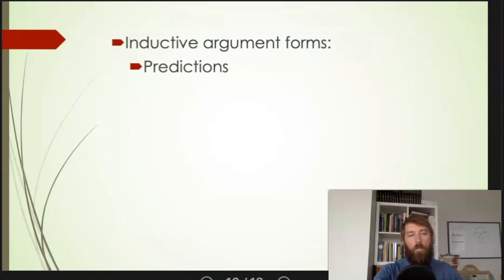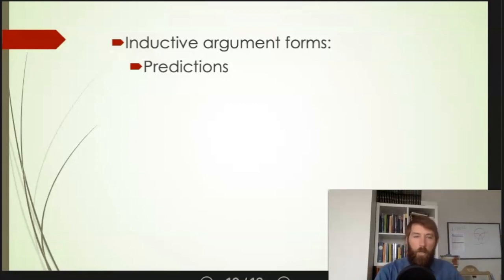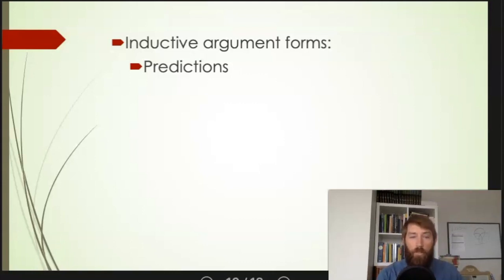Kinds of inductive arguments: we've already talked about predictions. Arguments that make predictions about the future based on what's happened in the past are inductive, because nobody knows the future for sure. We make predictions that are educated guesses based on evidence, and some predictions are better than others. For instance, 'I predict I'm going to eat lunch in a little while' is a pretty good prediction because historically just about every day of my life I've eaten lunch — that's better than the college football prediction, which may not be quite as strong.